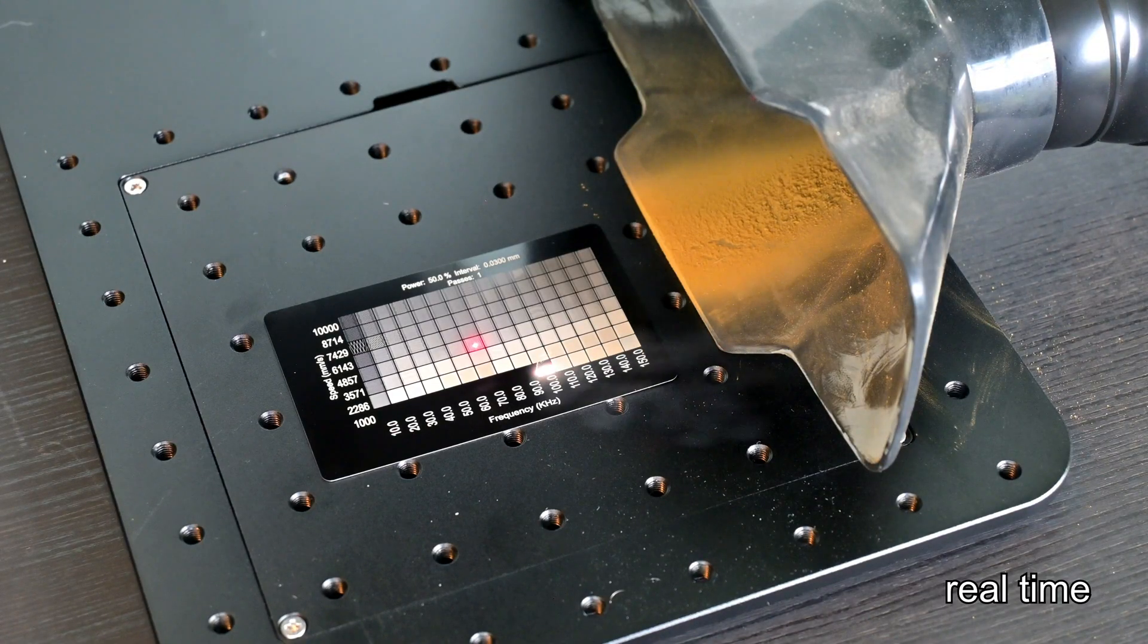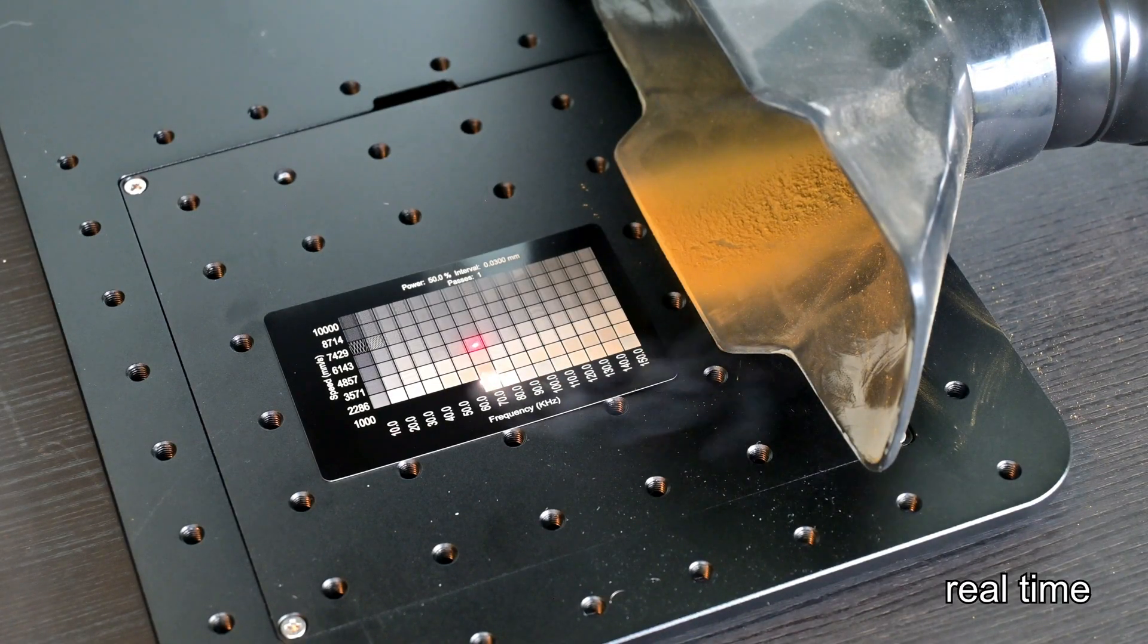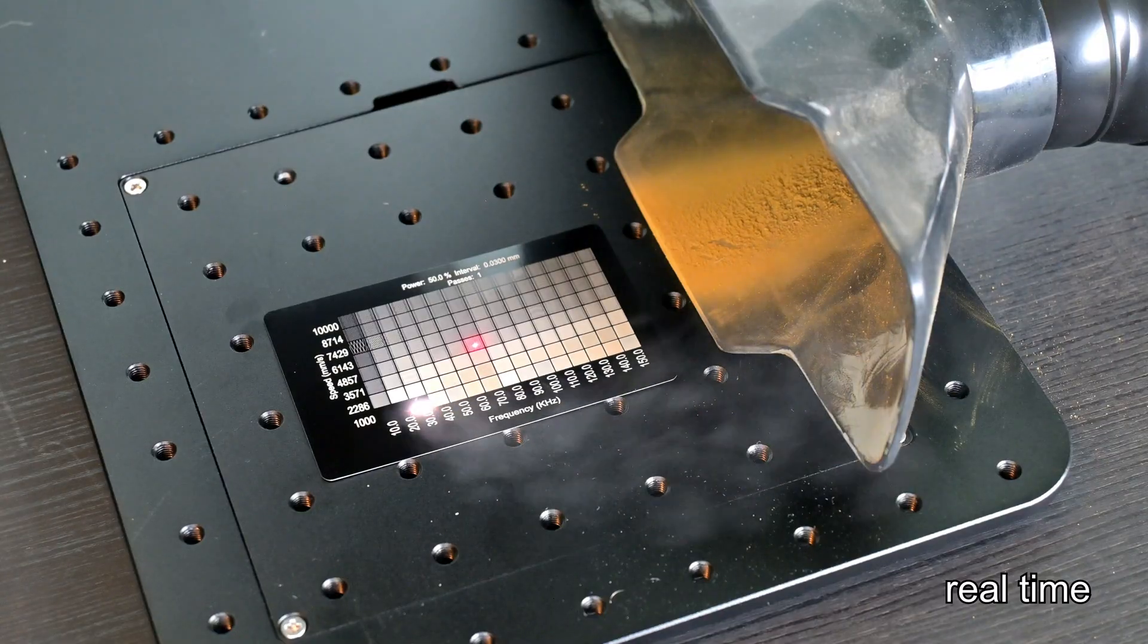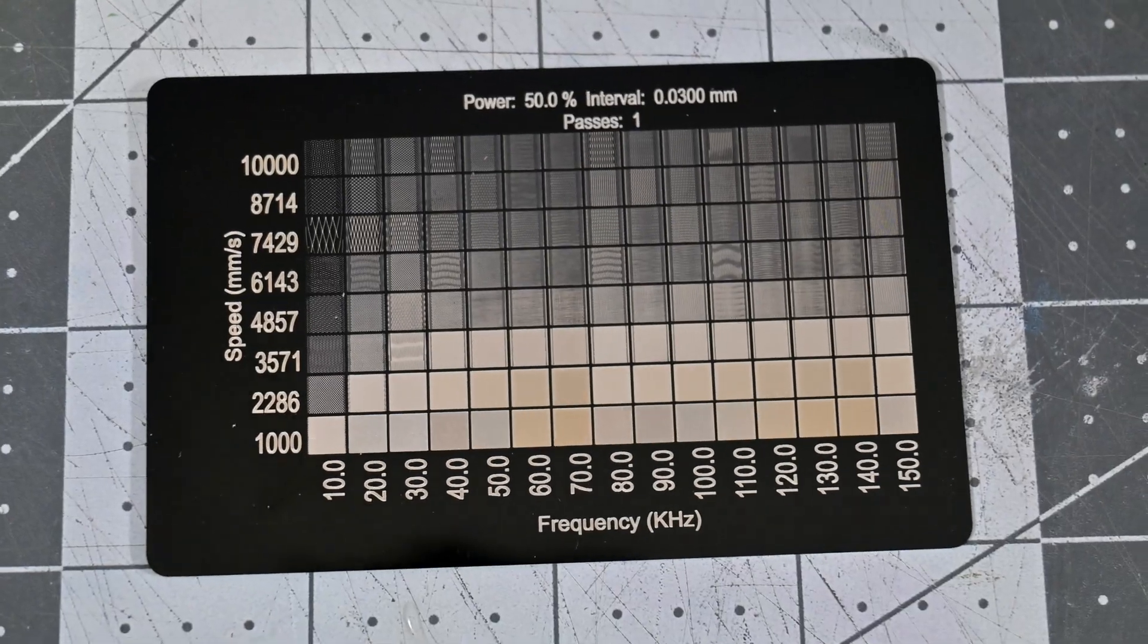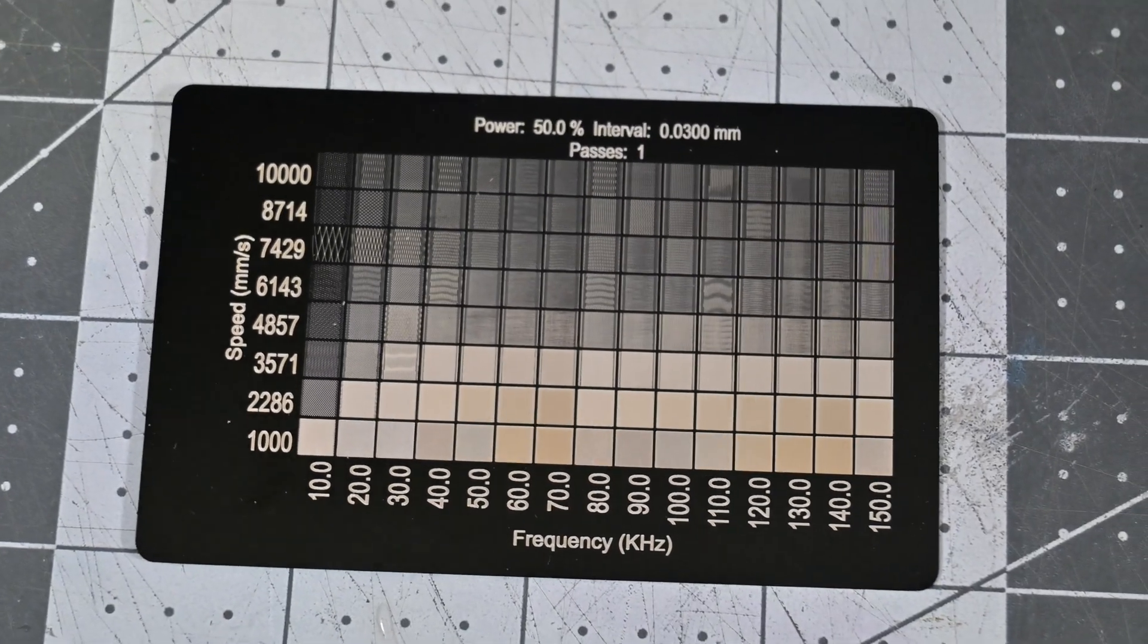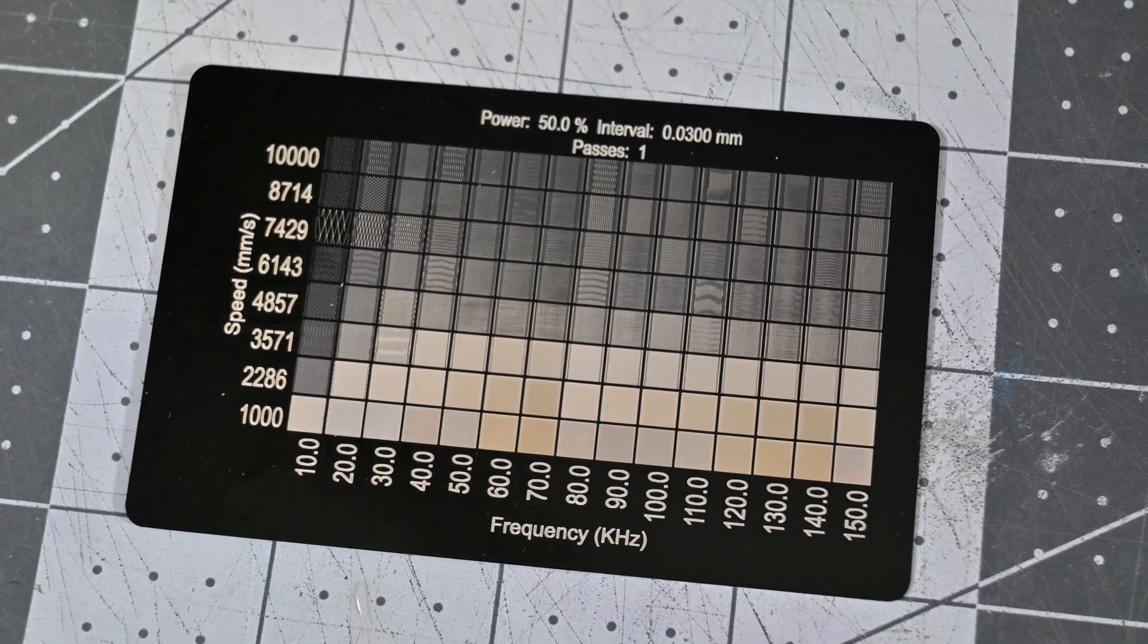It's important to test speeds and frequencies on your materials. Too fast of speeds or too low of a frequency can show pulsing artifacts, so you won't be running at 10,000 millimeters per second most of the time. Normally, I was between 1,000 and 4,000 millimeters per second depending on the material.